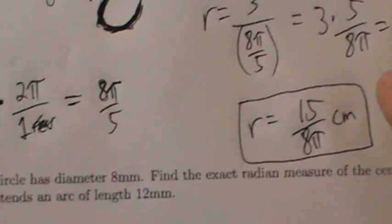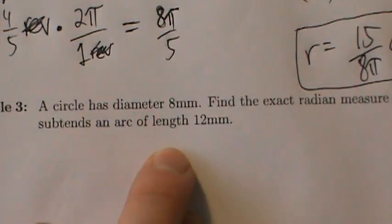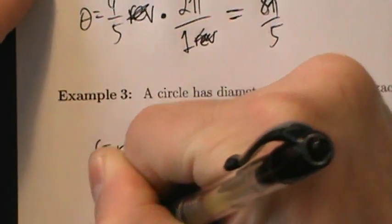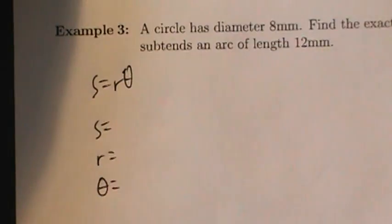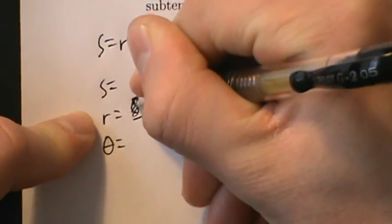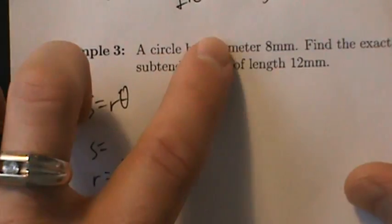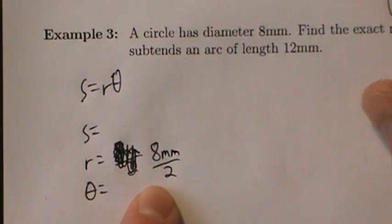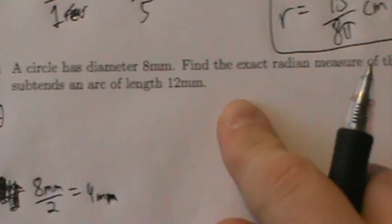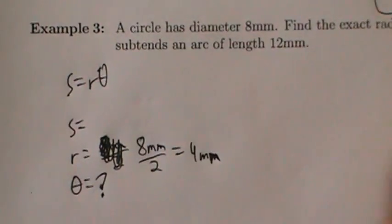That's example two. Last example in this video: example three. A circle has diameter 8 millimeters. Find the exact radian measure of the central angle that subtends an arc of length 12 millimeters. This one's going to be a little more straightforward than example two. Write down: s = r*theta, s = , r = , theta = . The circle has diameter 8 millimeters, so r = 8/2 = 4 millimeters, since the radius is half the diameter.